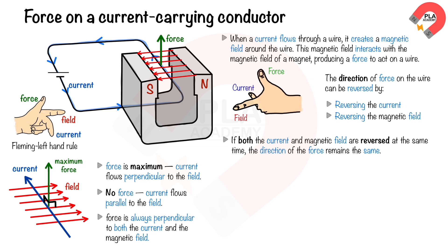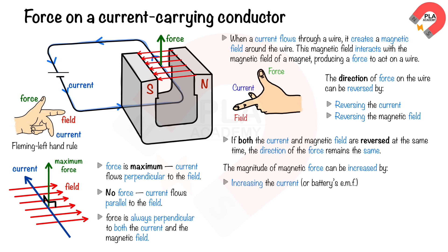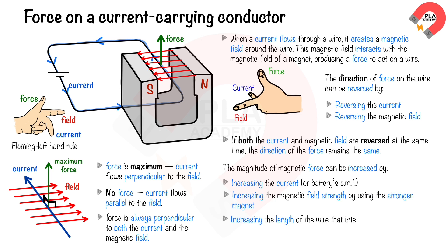The magnitude of magnetic force can be increased by increasing the current, increasing the magnetic field strength by using a stronger magnet, or increasing the length of the wire that interacts with the magnetic field by adding more loops.